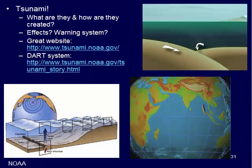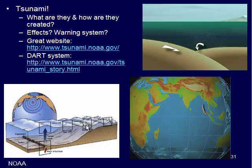Another hazard that exists is tsunamis. Basically what happens — some kind of disruption on the ocean floor, such as an earthquake at a plate boundary, forces the ocean floor up or down. That motion moves the water on top of that location, creating a huge wave. It propagates outward in a radial fashion, and as it moves closer and closer to land it maintains that wave height, eventually breaking on land and inundating huge areas.